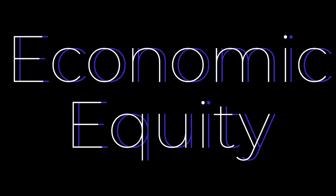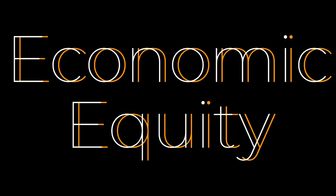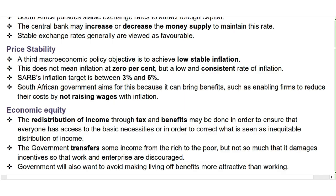Lastly, we have economic equity. The redistribution of income through tax and benefits may be done to ensure that everyone has access to the basic necessities, or to correct what is seen as an inequitable distribution of income. The government transfers some income from the rich to the poor, but not so much that it damages incentives so that work and enterprise are discouraged. Government will also want to avoid making living off benefits more attractive than working.